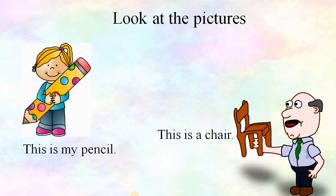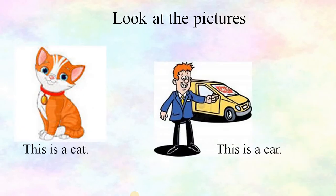Here are some examples. Look at the picture. This is my pencil. This is a chair. Look at this picture also — this is a cat. This is a car. So kids, when any person, place, or thing is near to us, we use 'this'.